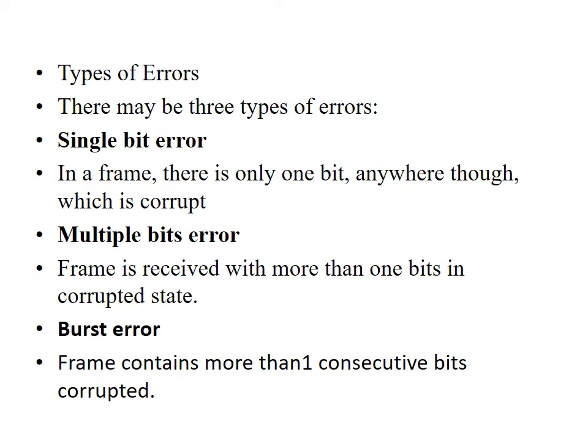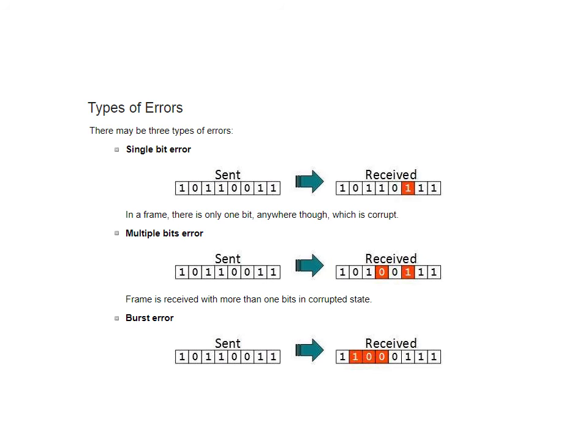The single bit error — the name itself tells us that when in a frame only one bit is changed or corrupted, that is called a single bit error. The multiple bit error is when the frame is received with more than one bit in a corrupted state at the receiver side. And the burst error is when the frame contains more than one consecutive bit corrupted at the receiver side.